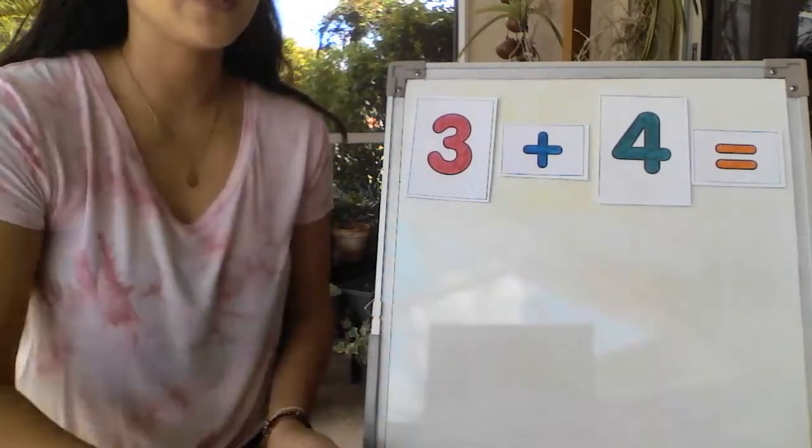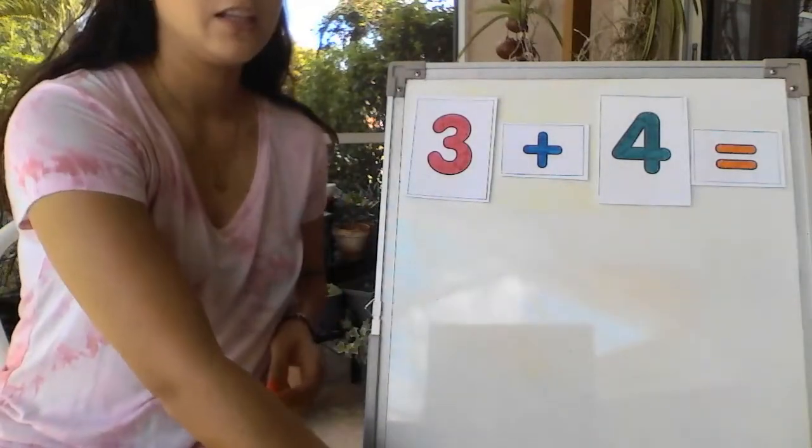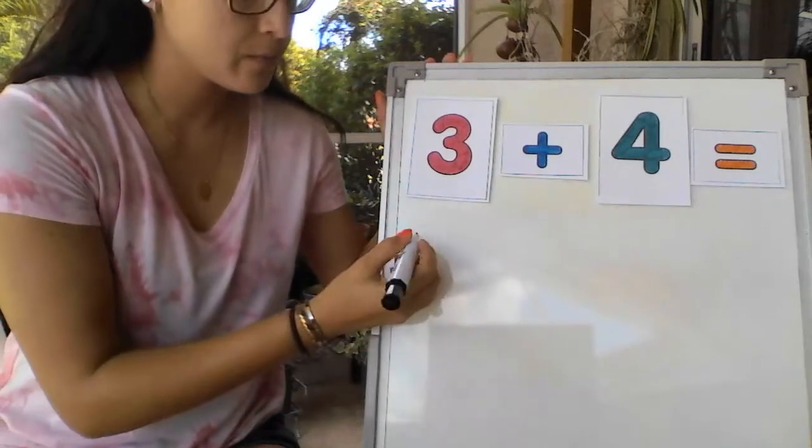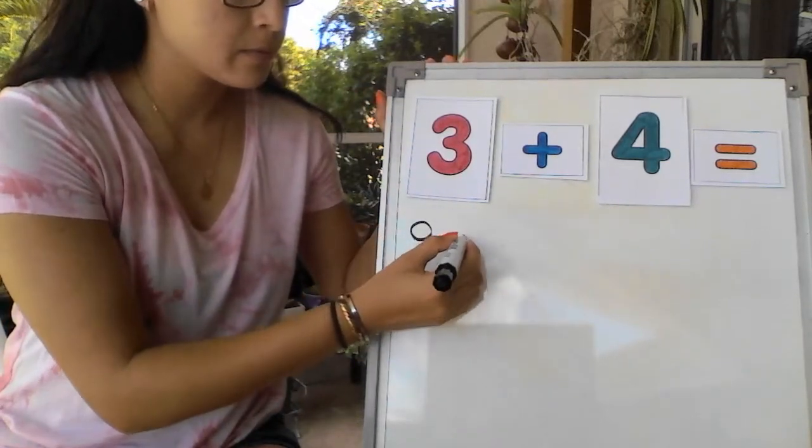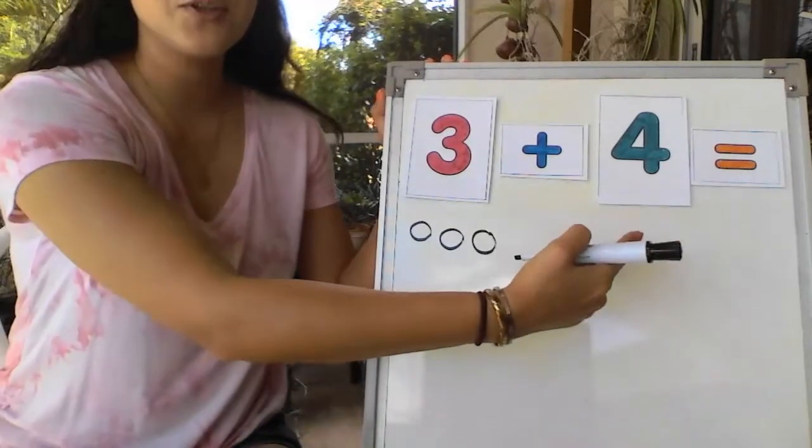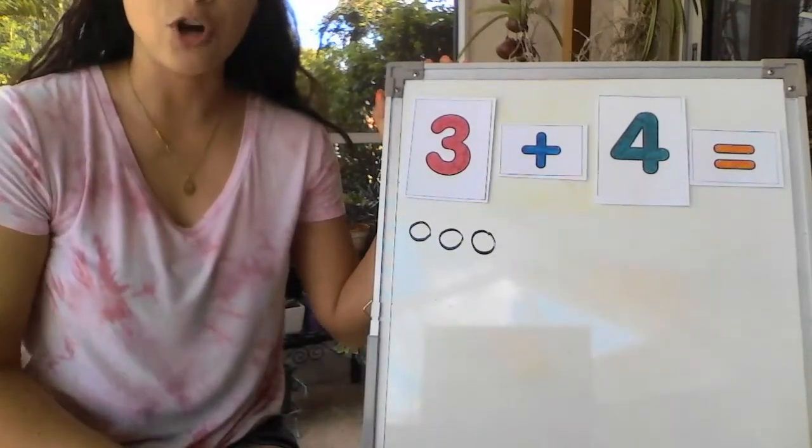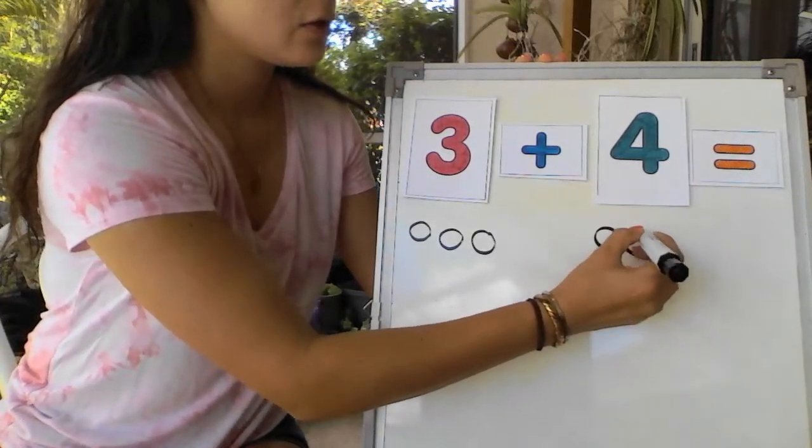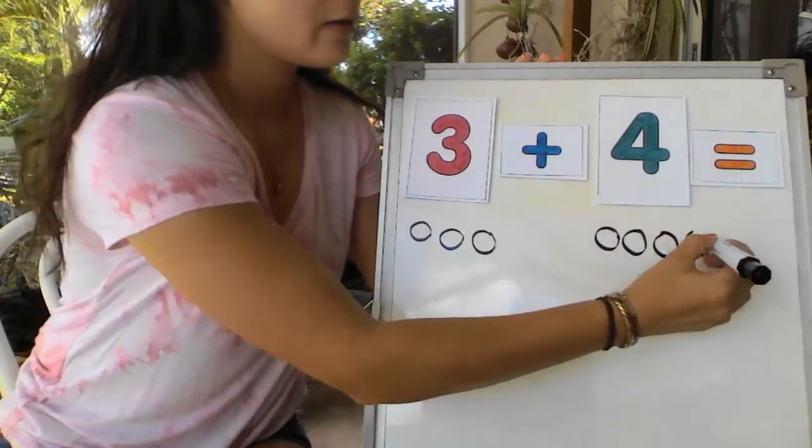Let's do it the second way. With a marker. Let's draw 3 circles under the number 3. 1, 2, 3. Let's do the same thing for number 4. Draw 4 circles under 4. 1, 2, 3, 4.